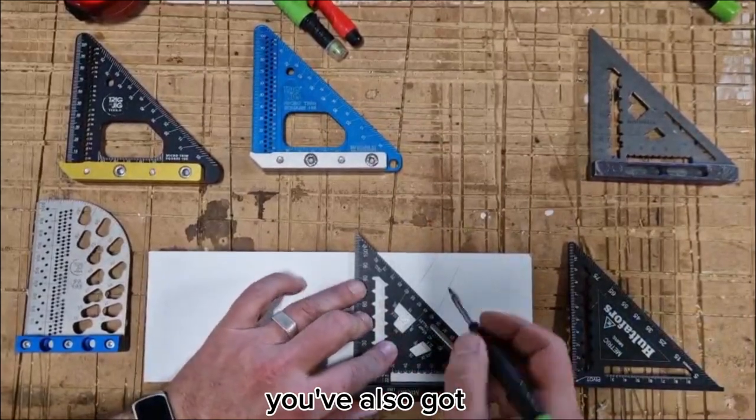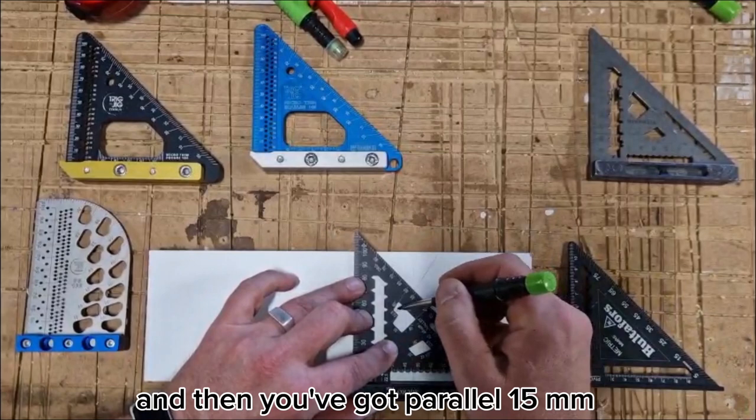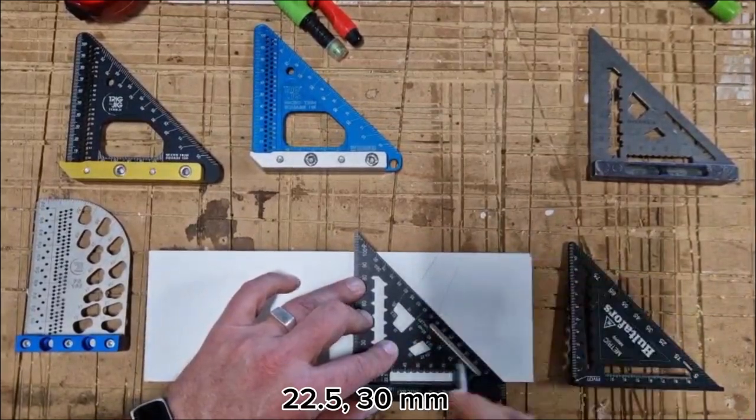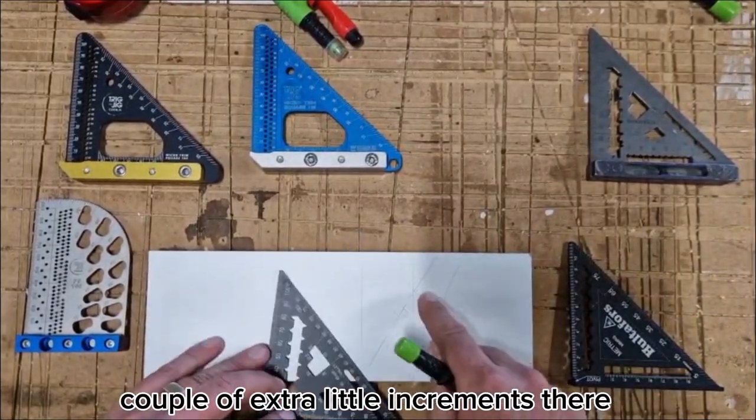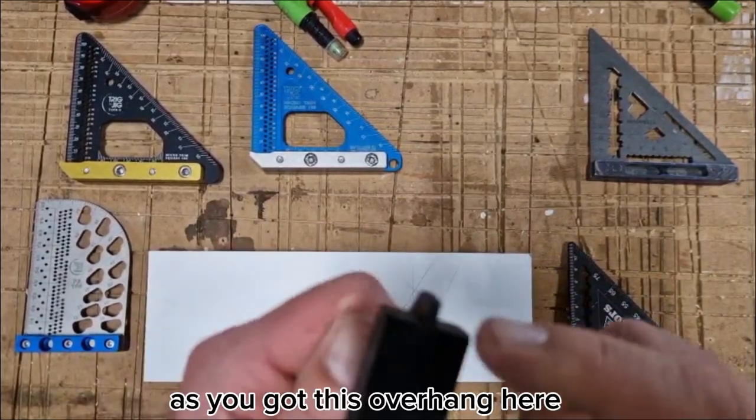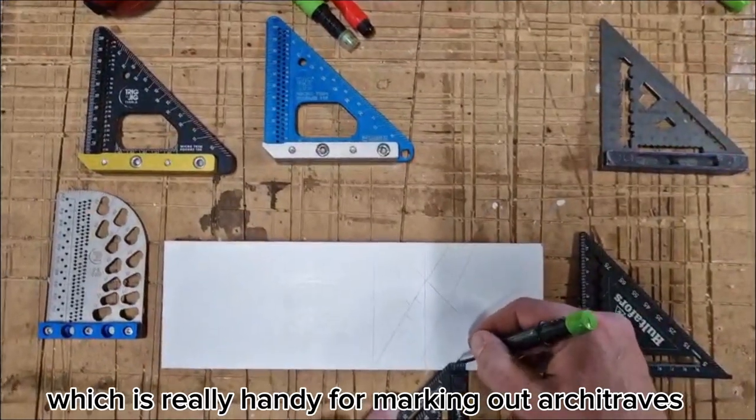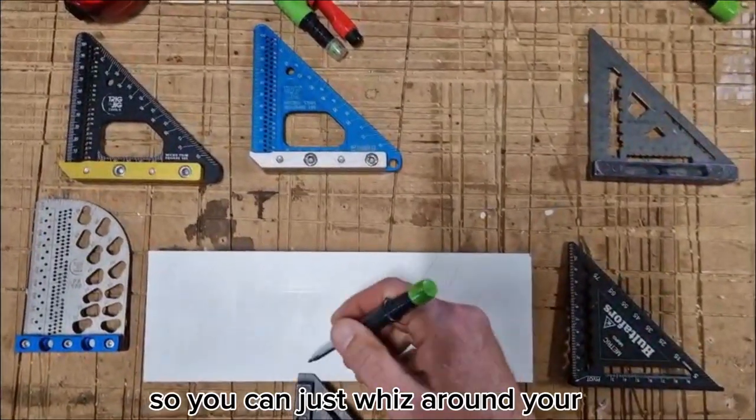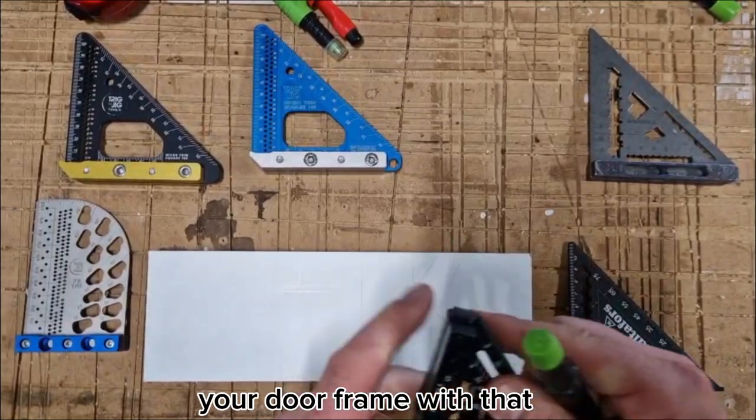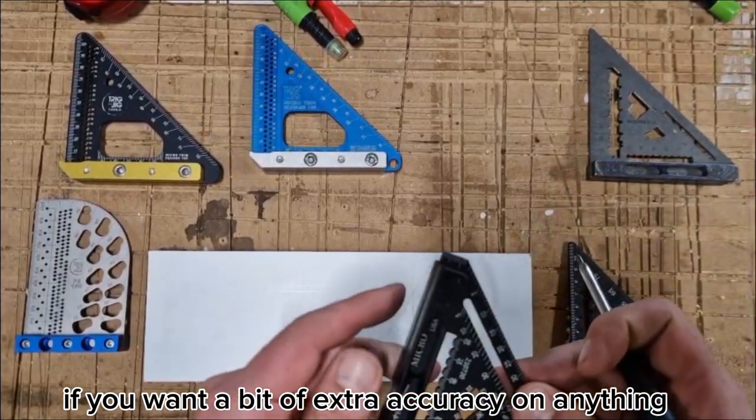You've also got 45 degrees there and then you've got parallel 15mm, 22 and a half, 30mm, a couple of extra little increments there parallel 45 degrees. Another feature is you've got this overhang here which is really handy for marking out architraves, so you can just whiz around your door frame with that. You've got little millimeter increments there if you want a bit of extra accuracy.